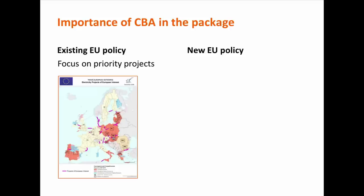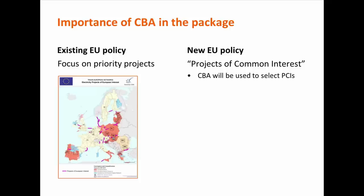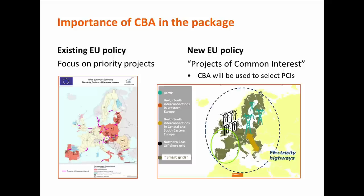What changes now with the new package? In the new EU policy, we will have a focus on projects of common interest. This label is not new, but what is new is that cost-benefit analysis will be used to select projects that will receive this label. There will be newly established regional groups — a decision body of the European Commission together with member states — that will receive candidate projects. Promoters will submit their projects with a CBA analysis to these regional groups, projects will be compared and ranked, and eventually regional groups will submit a list to the European Commission, who will adopt a single list.